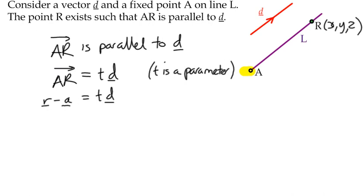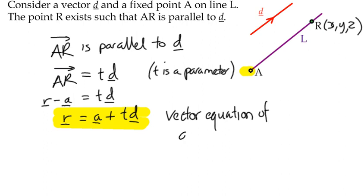And we're actually rearranging because R, remember, is the x, y, z part. So we're saying the unknown variables x, y, z is equal to A plus some value T multiplied by D. That is the vector equation of the straight line. R equals A plus TD is the vector equation of a straight line in three dimensions.